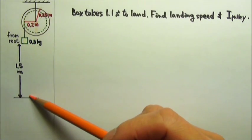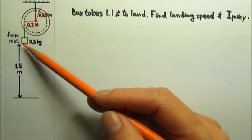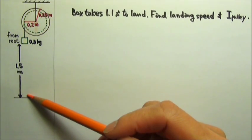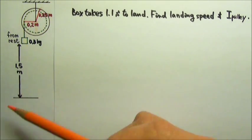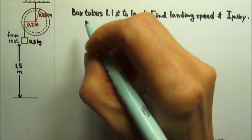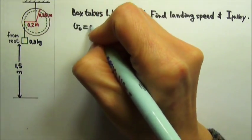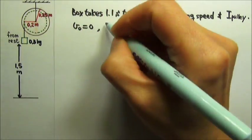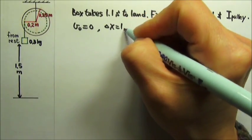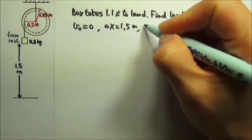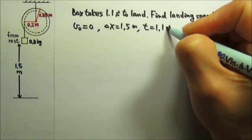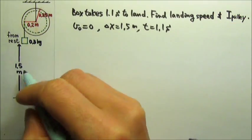The box accelerates down at a constant rate. So it's constant acceleration motion, and we already know three things. We know it starts from rest, so initial velocity is zero. The displacement is 1.5 meters, and the time is 1.1 seconds.